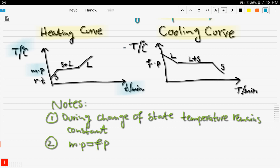The temperature remains constant until the substance has completely changed to liquid, then the temperature begins to rise again. The cooling curve is exactly the opposite of the heating curve. Starting as a liquid and decreasing temperature, at the freezing point — which is the same temperature as the melting point — the state is both liquid and solid. After the change is complete, the temperature resumes decreasing.